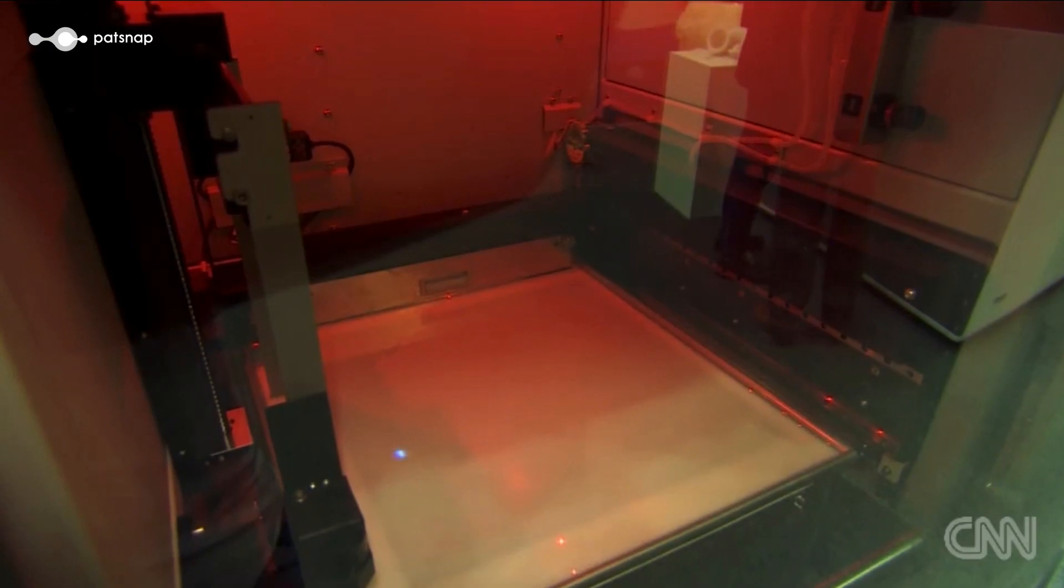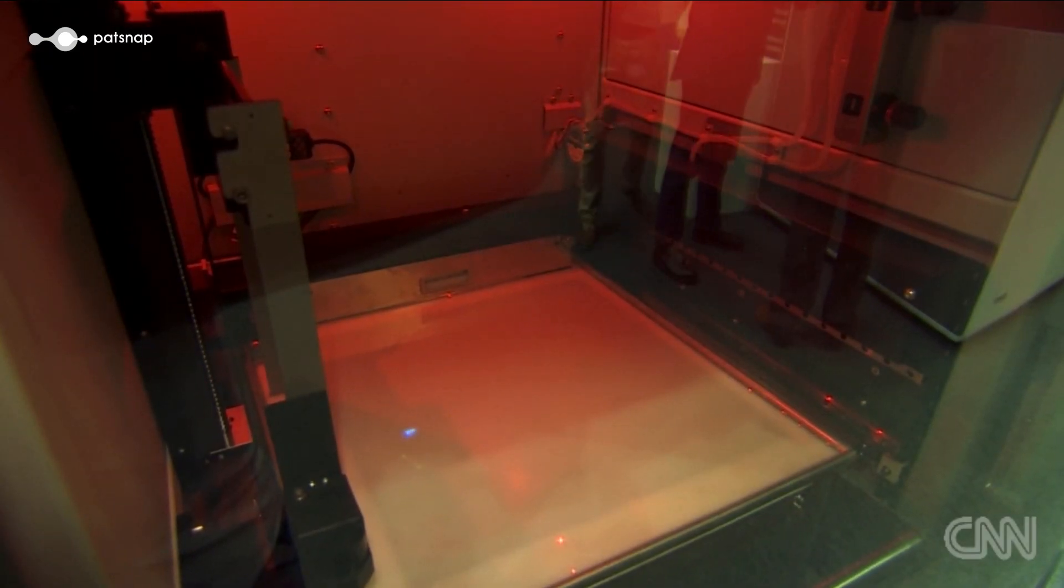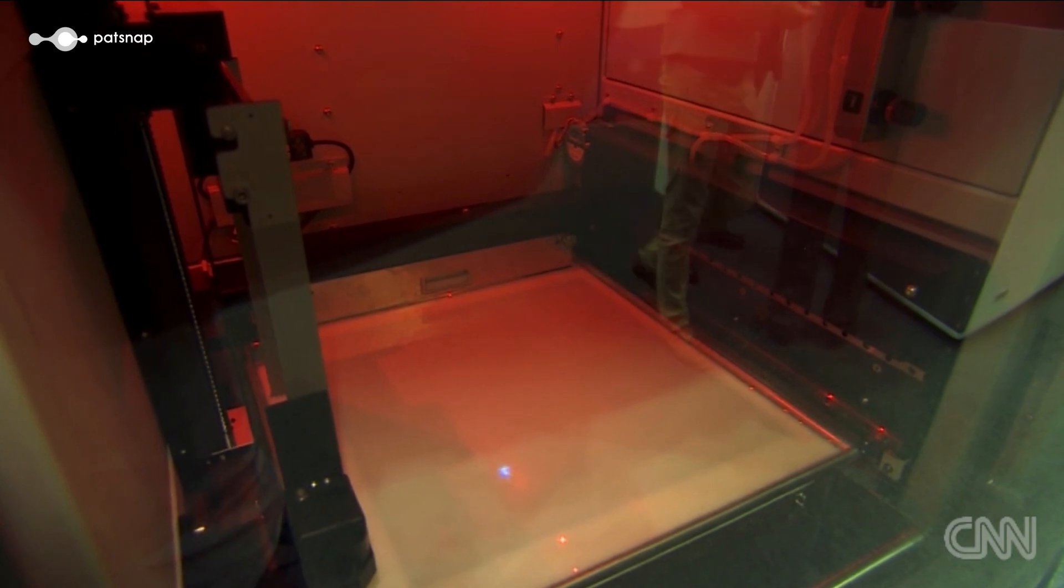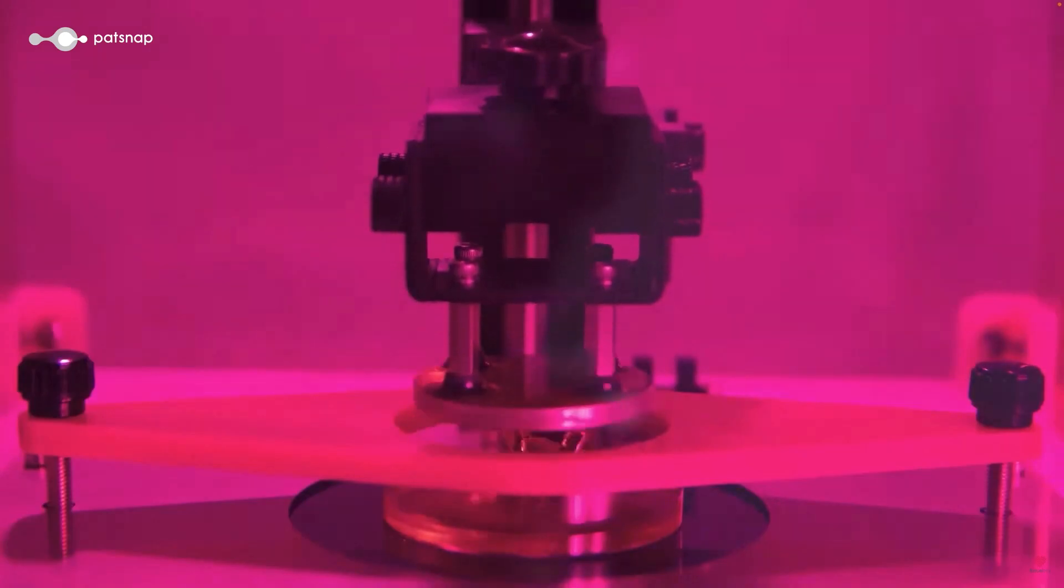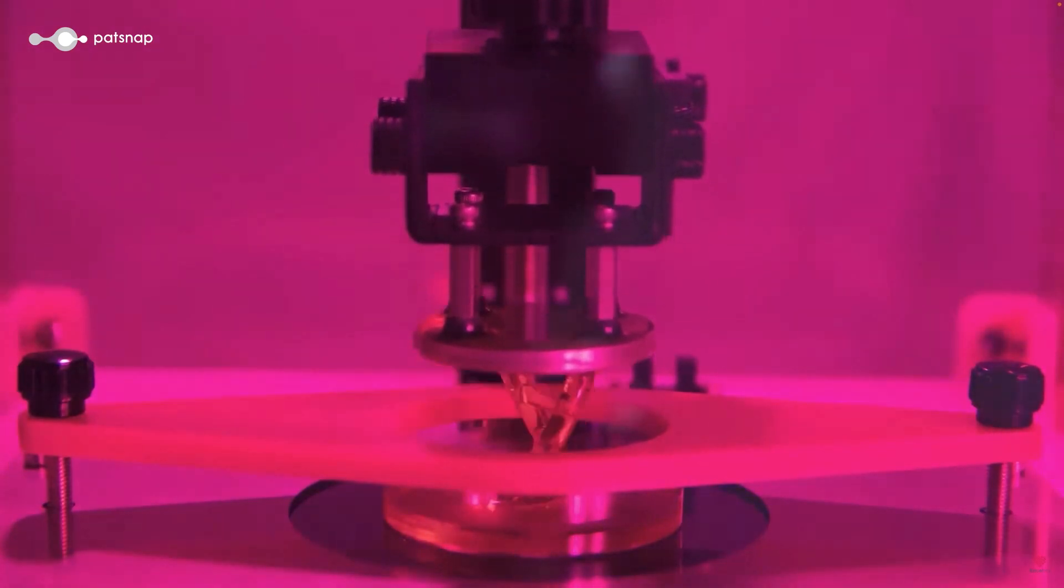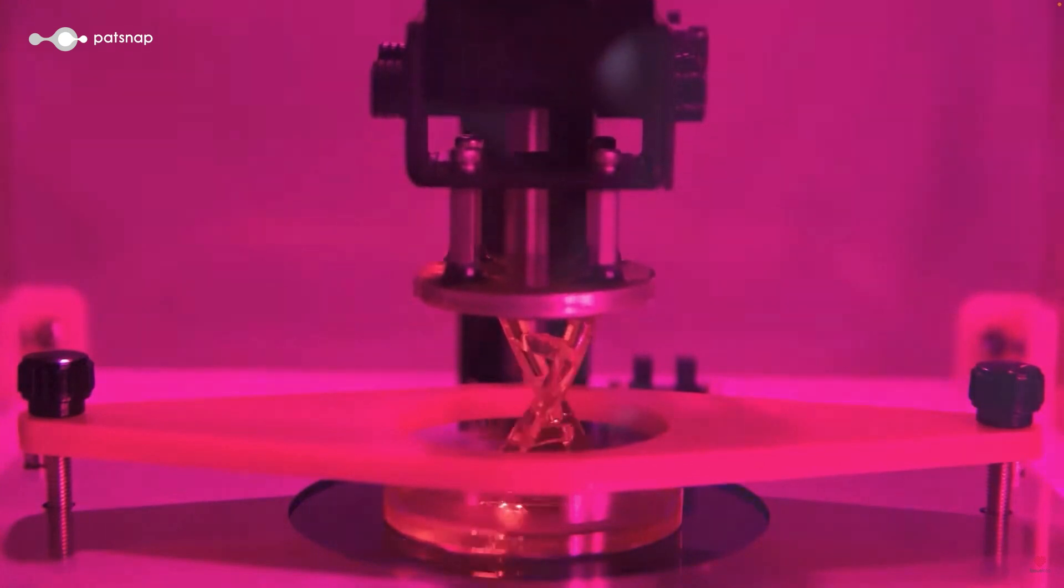The process starts with a pool of light-sensitive bio-ink. A light source, typically a laser or digital light projector, is directed at the ink, and the areas exposed to the light harden. The printer creates the structure layer by layer, as each layer solidifies the build platform lifts, allowing the next layer to be formed underneath. This continues until the entire structure has been built.